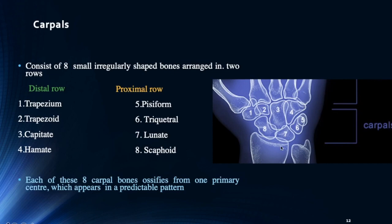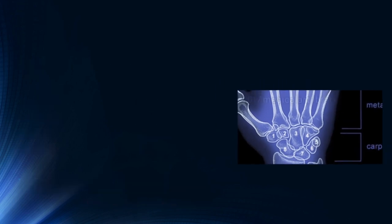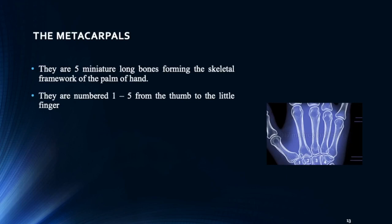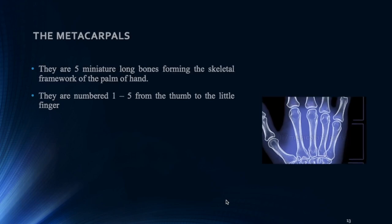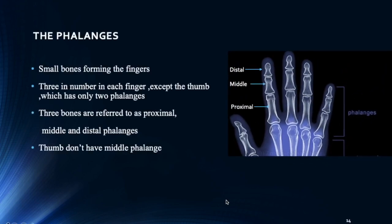You can see the carpal bones here, and this is one of the important questions in MCQ exams. The metacarpals consist of 5 miniature long bones which form the framework of the palm of the hand. Phalanges are divided into distal, middle, and proximal phalanges. All fingers have 3 phalanges except the thumb, which does not have a middle phalanx.